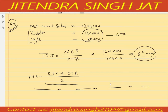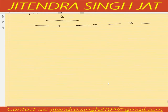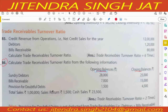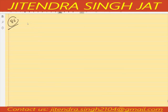Question number 86: calculate trade receivable turnover ratio from the following information. Here opening and closing balances are given — debtors, bills receivable, and provision for doubtful debts. Total sales is given, sales return is given, and cash sales is given.